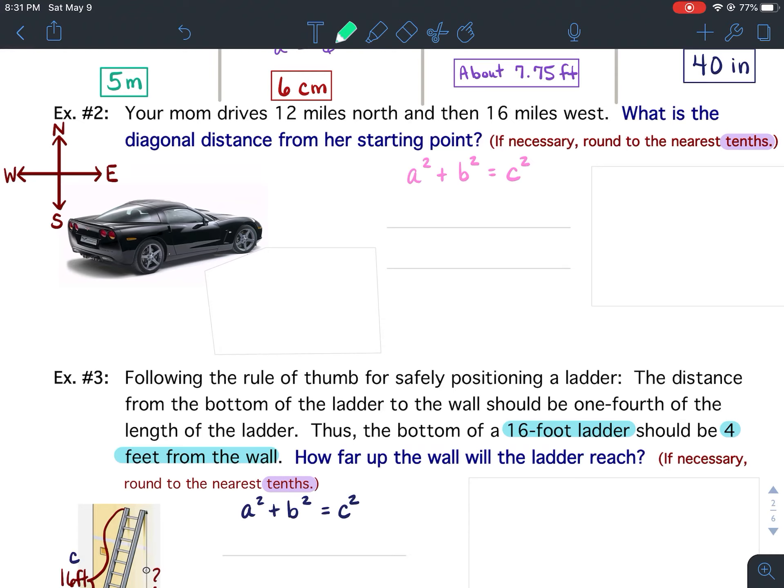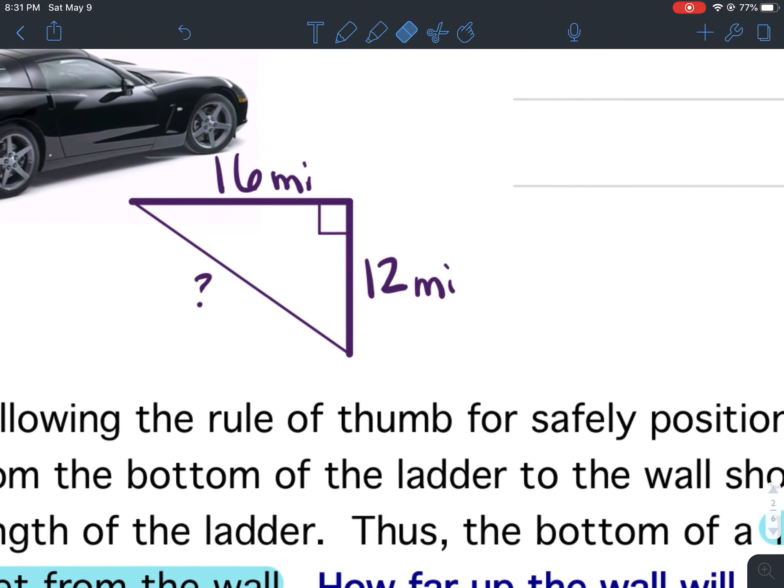The reason why you need to know your direction is so using the 12 miles north and the 16 miles west, you need to draw a triangle. So going directly 12 miles north and then going directly 16 miles west causes a right angle. So when you're doing problems like this, the first thing you need to do is draw a triangle. Pause your video and go ahead and get that triangle drawn.